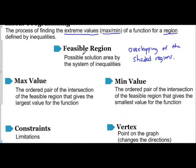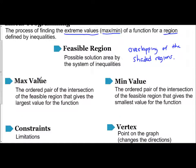The maximum value is the ordered pair of the coordinate of intersection. Same thing with the minimum value, the ordered pair of the coordinate of the intersection of the feasible region. For maximum, it's going to give you the largest value for the function. And for minimum, it's going to give you the smallest value of the function.